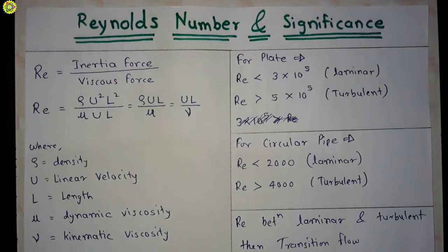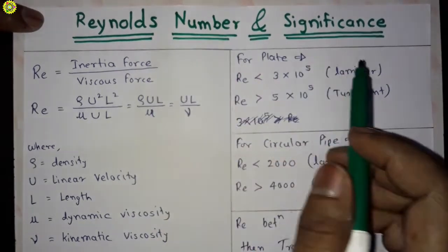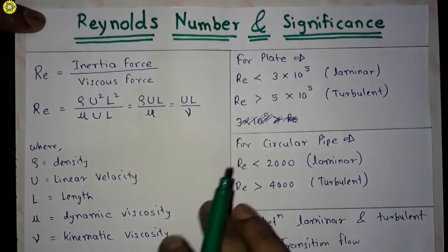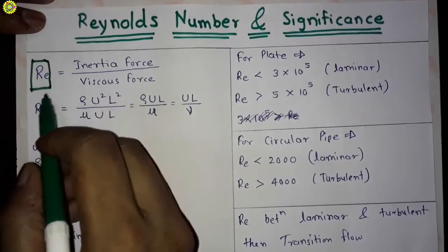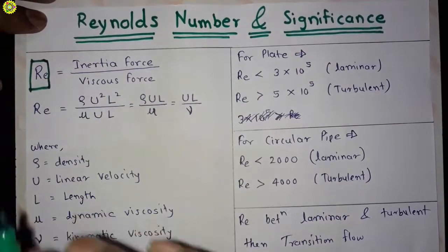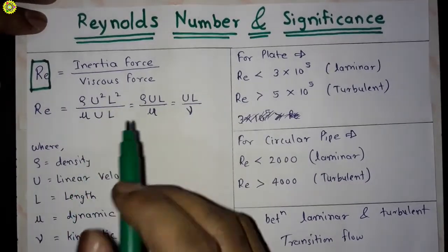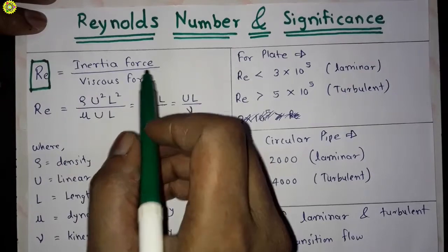Hi friends, welcome. In this video we will understand the Reynolds number and its significance. Re is the symbol of the Reynolds number, and Reynolds number is defined as the ratio of the inertia force to the viscous force.